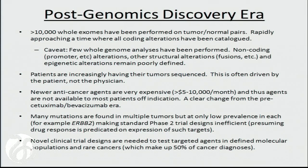I want to introduce one concept we're calling the post-genomics discovery era. This is based on the evidence that very soon we will have sequenced over 10,000 whole exomes from patients with cancer. What we're finding is that as we do more and more of these, we're not really discovering a whole lot of new cancer genes — we're finding the same genes in different diseases and different combinations. And patients are increasingly having their tumor sequenced themselves.